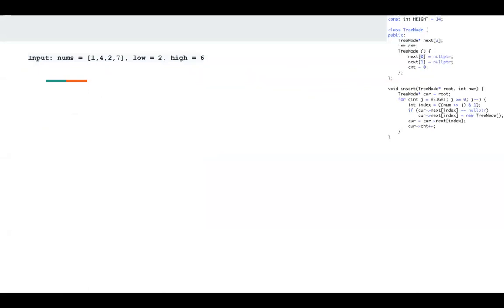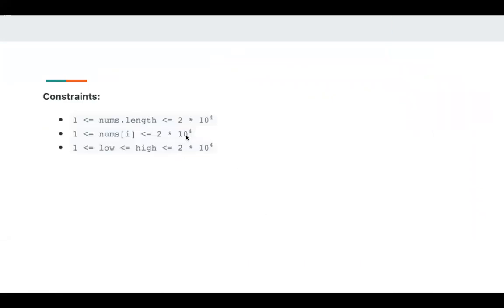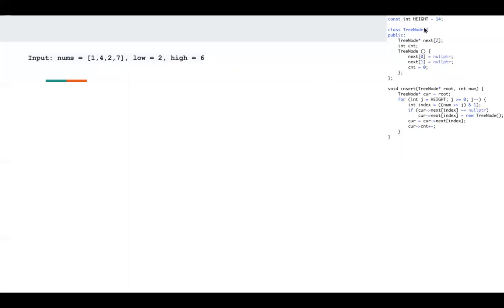Of course, for a large XOR problem, we need to use Trie. And since the constraint is two multiply 10 to the fourth, the height is 14 here. The height means I will loop from height to zero.